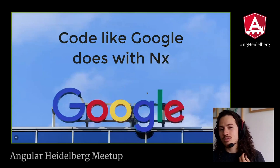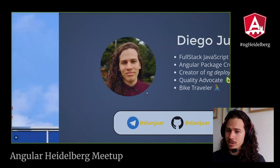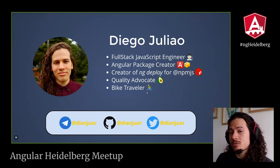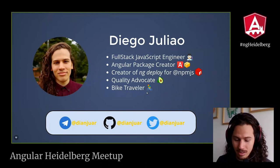We are here to know how we can code like Google does with NX. First of all, I want to present myself. My name is Diego Giuliao. I am a full-stack JavaScript engineer. I am a package Angular creator and the creator of NG Deploy for NPM. Also I am a quality advocate — I really love themes about quality, unit tests, and end-to-end tests.